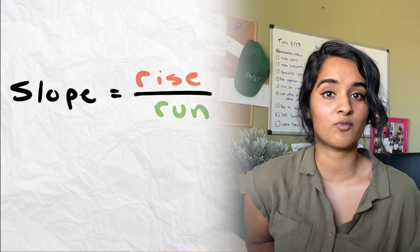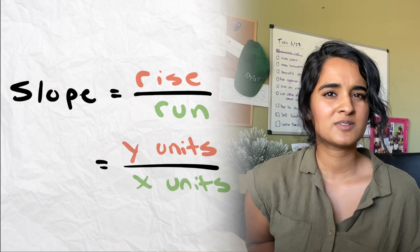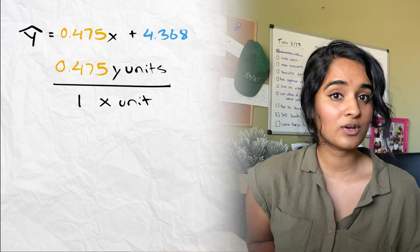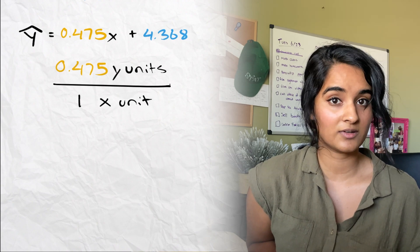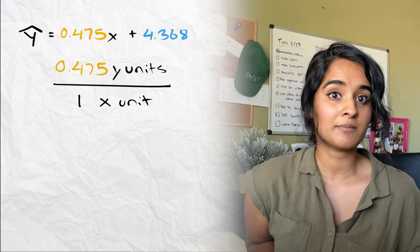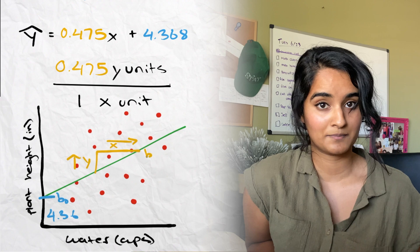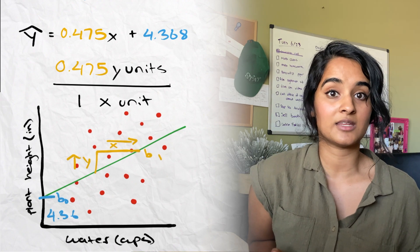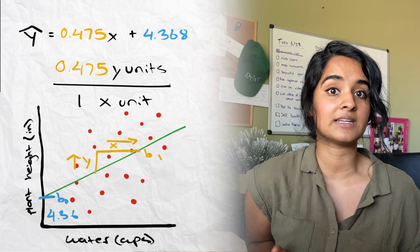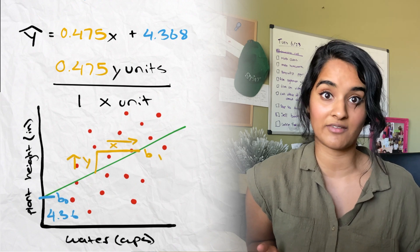Now let's interpret the slope. Slope is rise over run — the amount of y units over x units. We can see that 0.475 is the y units over 1 x unit, so it rises 0.475 and goes to the right 1 unit. So for every 1 unit increase in the amount of water, the predicted height of the plant in inches increases by 0.475 on average. Remember, 'on average' is really important — this is only a prediction, an approximation of the y values.